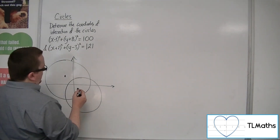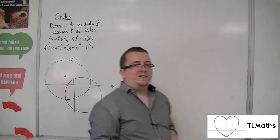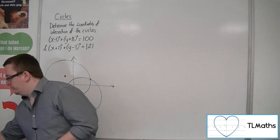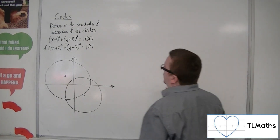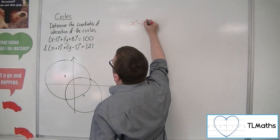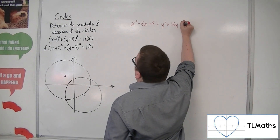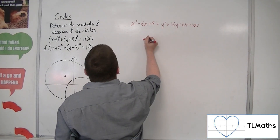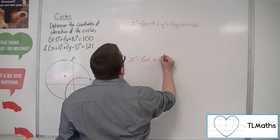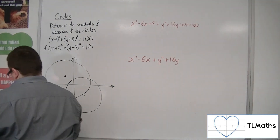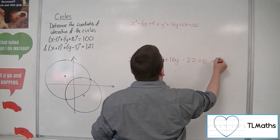So we've got these two circles, and they don't need to be accurate. The point is that they intersect at two distinct points, and I want to find the coordinates of these. What I could do first is expand both circle equations to get x squared minus 6x plus 9 plus y squared plus 16y plus 64 equals 100, which gives x squared minus 6x plus y squared plus 16y minus 27 equals 0. Let's call that equation number 1.